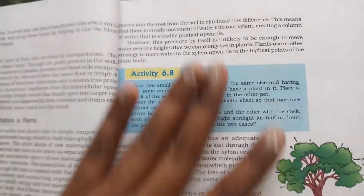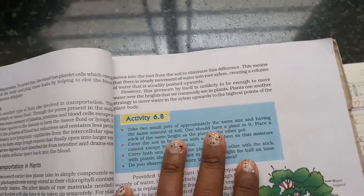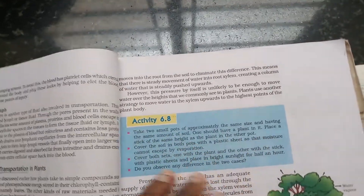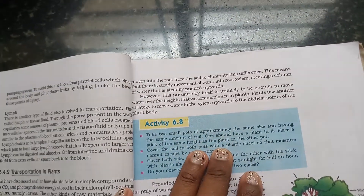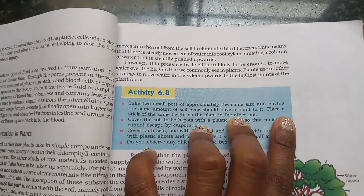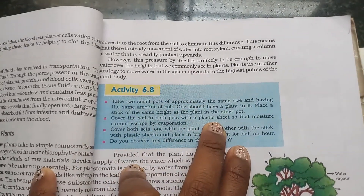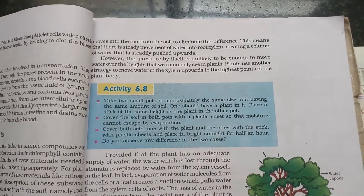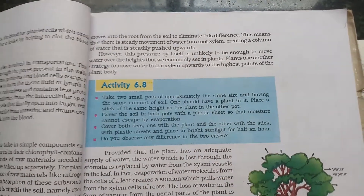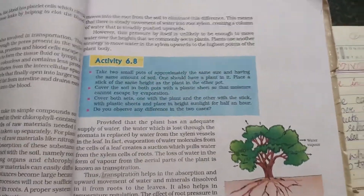Now we talk about Activity 6.8 from NCERT Books 10th Class Science Chapter 6. We take two pots of the same size. In one we place a healthy plant, and in the other we place only a stick. We cover both with a plastic sheet and keep them in bright sunlight for half an hour.